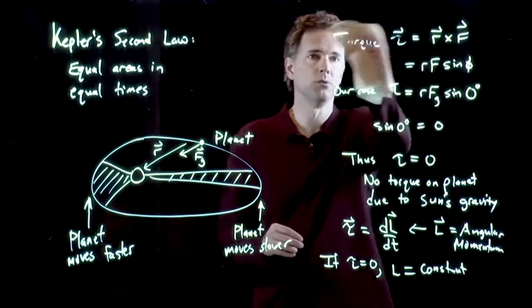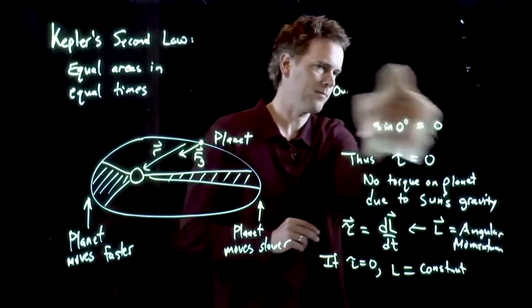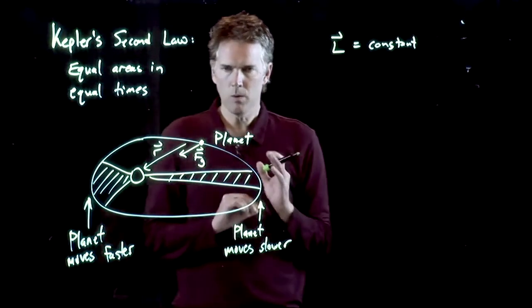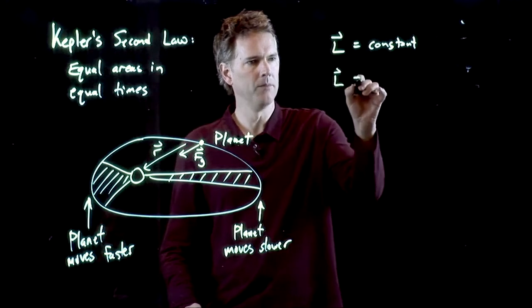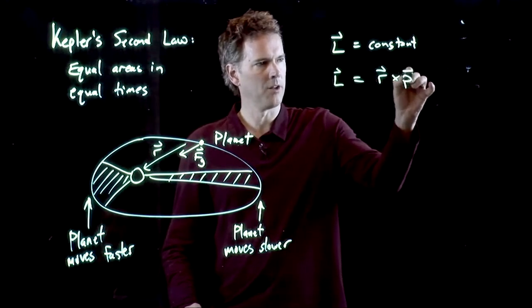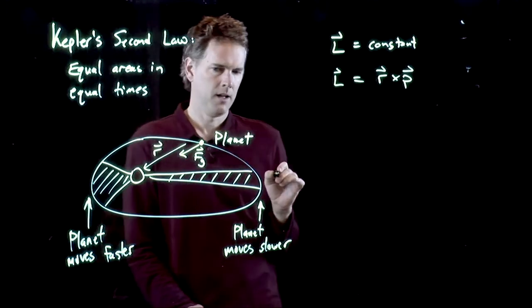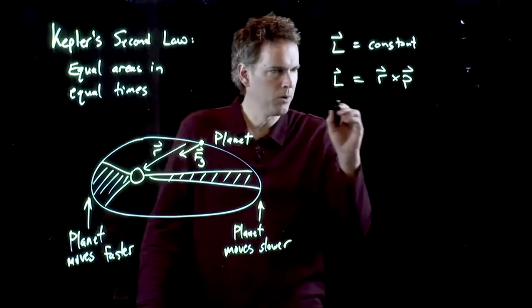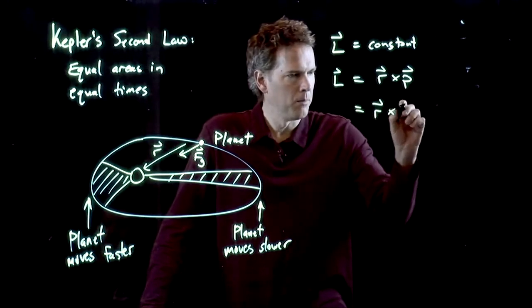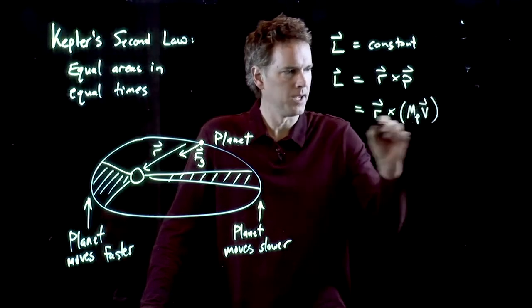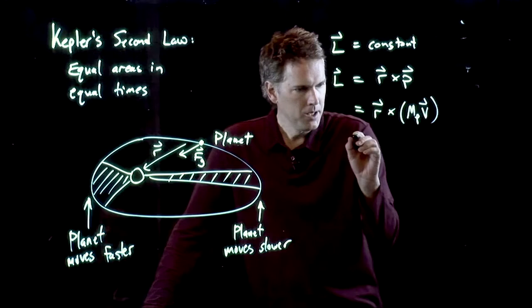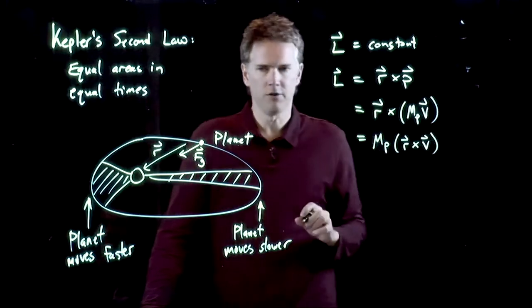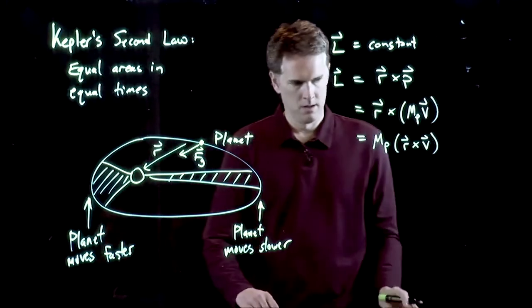Let's use that now to calculate something about speeds. The angular momentum of the planet is constant, but we know what angular momentum is. Angular momentum is R cross P. And R is the position vector, P is the momentum of the planet, and we know exactly what momentum is. Momentum is mass times velocity. That MP can, in fact, come out in front. And so we get MP is just R cross V.